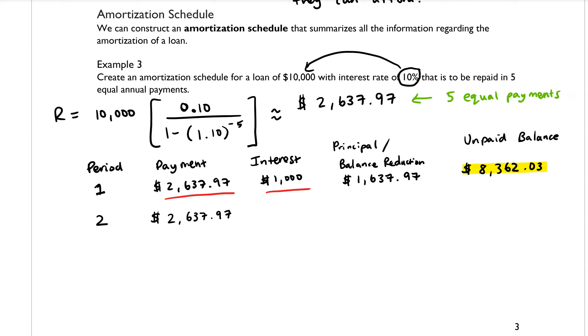what we're going to do now is this is our new unpaid balance amount. Previous to that, I guess if you want to think about it as period zero, our previous unpaid balance amount was $10,000, but now it's $8,362.03. So we would calculate 10% of that to get our new interest amount. So if you calculate 10% of that, that is $836.20.